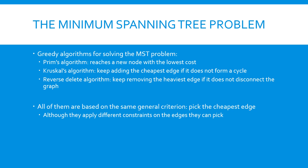Prim's algorithm aims to reach a new node with the lowest possible cost. Kruskal's algorithm includes the cheapest edge, provided that it does not form a cycle. The reverse-delete algorithm removes the heaviest edge, provided that it does not disconnect the graph. Each of these algorithms seeks to incorporate the cheapest edge while adhering to specific constraints.